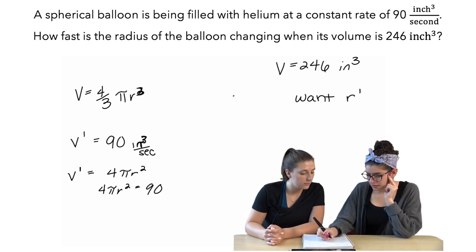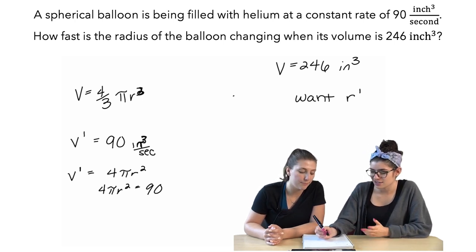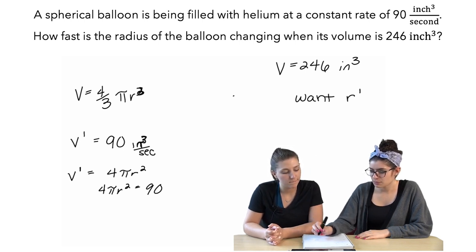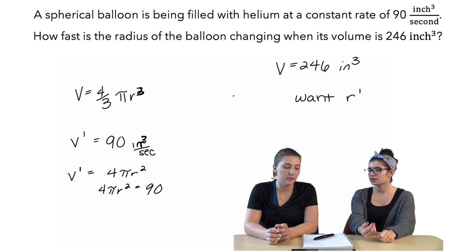I mean, but again, is that... like, what are we going to find if we solve? We're going to solve for r, and then that's not really helping us. Right. So, we might know what r is, but we want r prime, and we're not sure how to get there.